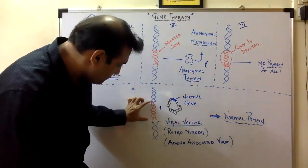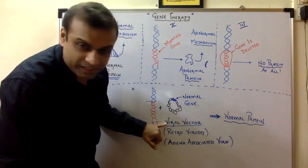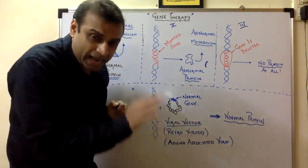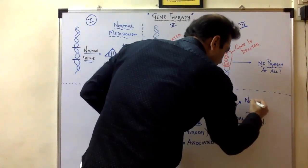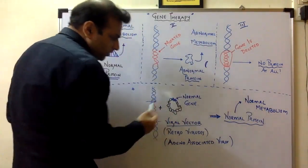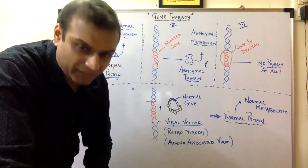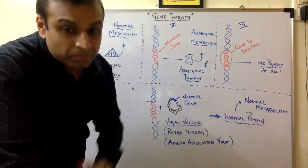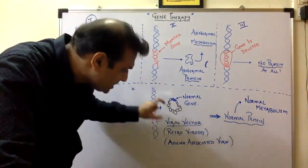In brief, what we do in gene therapy: consider this is a DNA with a mutated gene. We insert a normal gene with the help of a viral vector. This viral vector will directly insert that gene into the cell or nucleus, and the gene will start producing normal protein, leading to normal metabolism. The viral vectors can be retroviruses or adeno-associated viruses — viruses that do not cause severe diseases in humans but have a mechanism to transfer genes into our DNA.